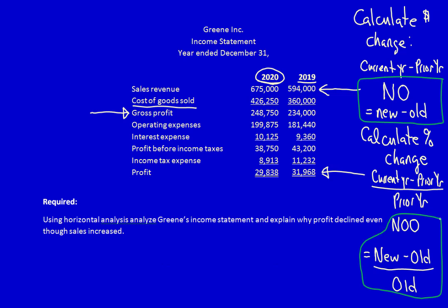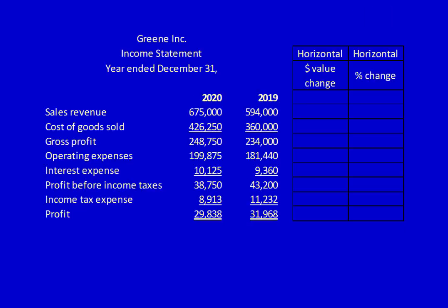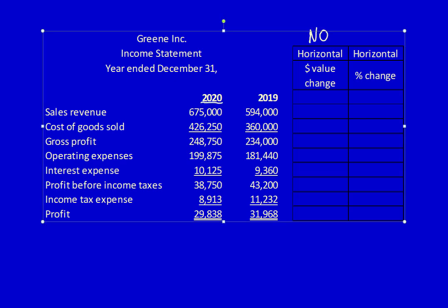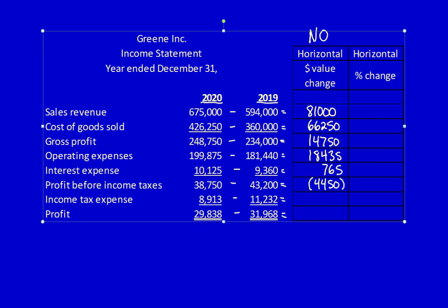Let's perform the dollar value calculations on the income statement for Green Ink using the NO formula — New (2020) minus Old (2019). Sales: $675,000 minus $594,000 equals $81,000. Cost of goods sold: $66,250. Gross profit: $14,750. Operating expenses: $18,435. Interest expense: $765. Profit before income tax: negative $4,450. Income tax expense: negative $2,320. And finally, profit: negative $2,131.